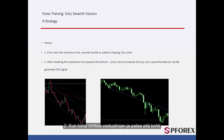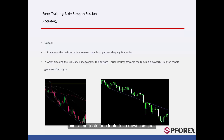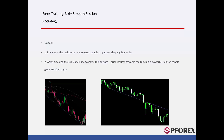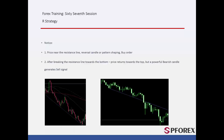After price passes a resistance line and returns towards it, if a powerful bearish candle forms on the resistance line, then a reliable sell signal will be generated. On the right graph, market price passed the resistance line but could not pass it towards the top after price returned towards it. An engulfing candle formed on this resistance line, so a trader could place a sell order.